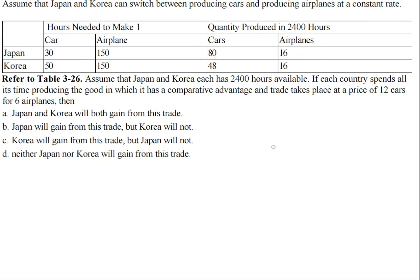Assume that Japan and Korea can switch between producing cars and producing airplanes at a constant rate. Assume that Japan and Korea each has 2,400 hours available. If each country spends all its time producing the good in which it has a comparative advantage, and trade takes place at a price of 12 cars for 6 airplanes, then?